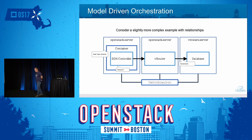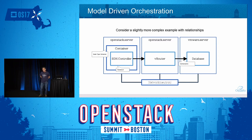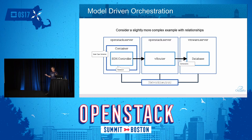If we consider a slightly more complex example with relationships, we have the concept of containment and connected-to relationships. For example, if I have a container inside an OpenStack server and an SDN controller inside that, pointing at a V-router and another instance — the model becomes more complex when we configure relationships. We want the orchestrator to be smart enough to use those relationships in the orchestration, mainly for the ordering of operations. You're building a dependency graph, essentially, in memory.